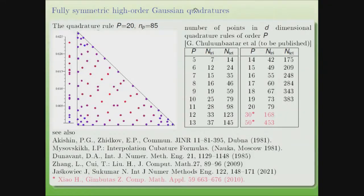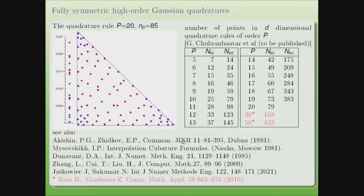One of the main problems in the realization of high-order finite element schemes is the calculation of integrals. For this, we describe some quadrature formulas. The numbers of points of quadrature rules of given order for the triangle and tetrahedron are presented here, along with one example of the quadrature rules.